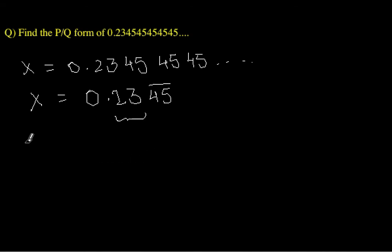Here what we do is first multiply by 100 to have all the recurring part after the decimal, so we have 100x = 23.45 bar. Now we multiply by 100 more to get 10000x.